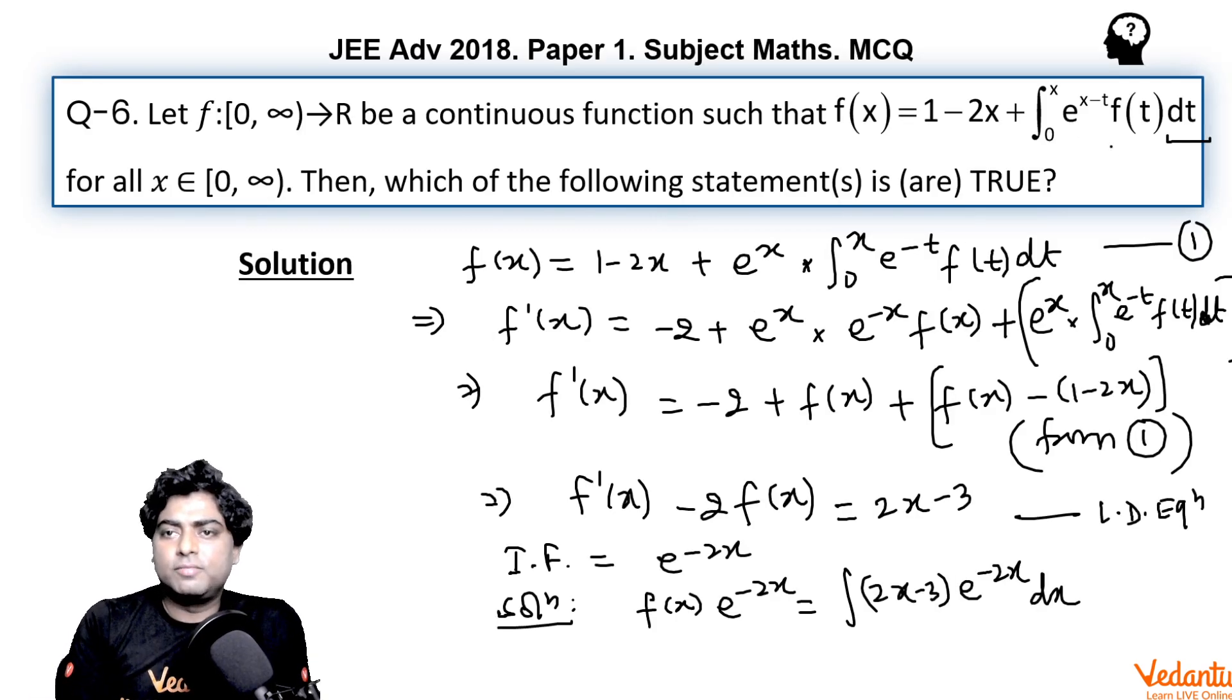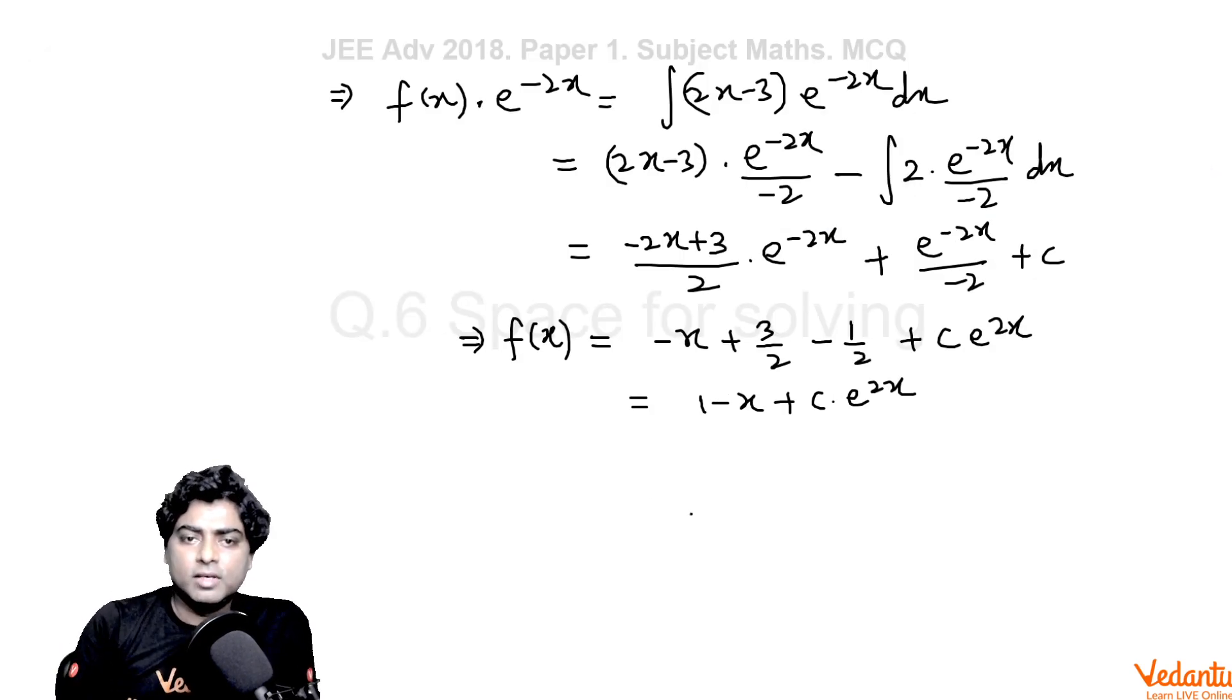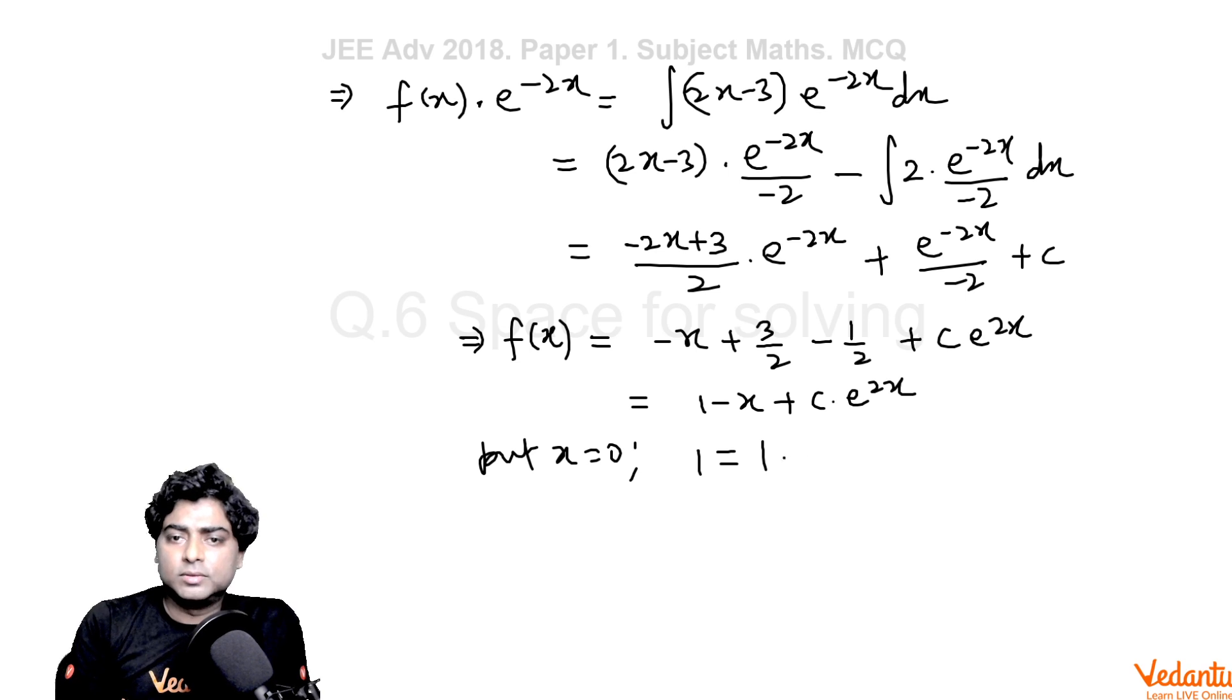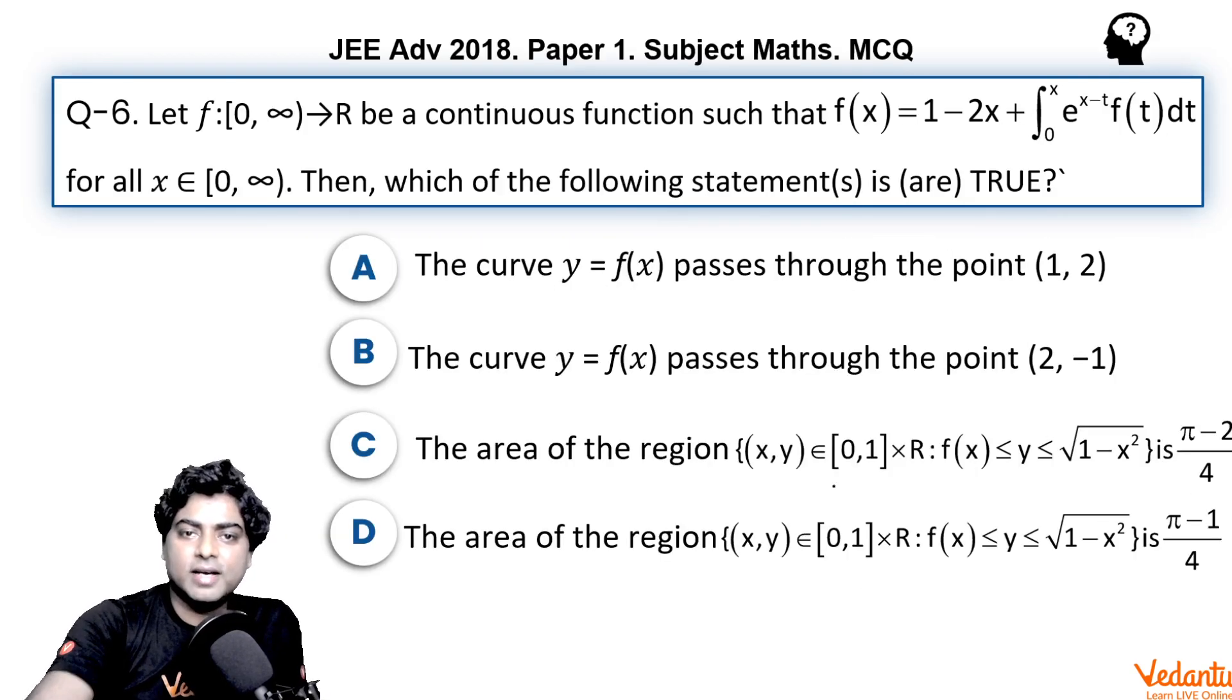But going to the question, if you find here, put x = 0, you will get f(0) as 1 since integral from 0 to 0 is 0. So using this fact that f(0) = 1, if you use it putting x = 0 here, you will get 1 = 1 - 0 + c, so c should be 0 only. So from here we got f(x) finally as 1 - x.